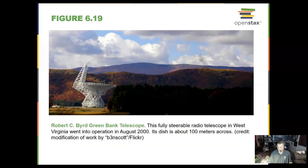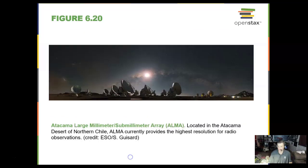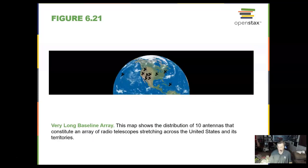The Green Bank Telescope in West Virginia is pretty large, 100 meters across. The large millimeter array in Chile at the Atacama Desert again in northern Chile. Or you can put radio telescopes throughout the Earth and link them all together so that the entire Earth is acting like a radio dish.